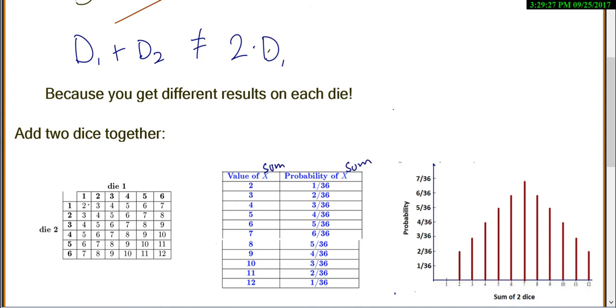So for a 2, there's only one way to get a 2. So 1 out of 36 possibilities. For like a 6, though, I have all of these 6s. So there's five different ways that I can get a 6. So 5 out of 36. And we can graph it. You can see here, this is what it looks like.